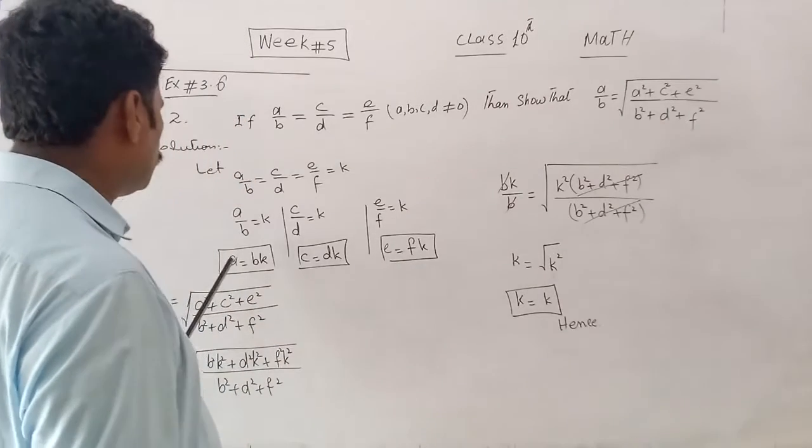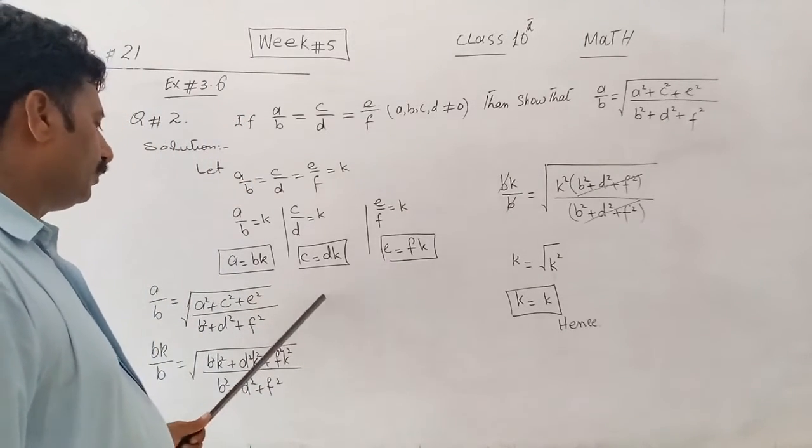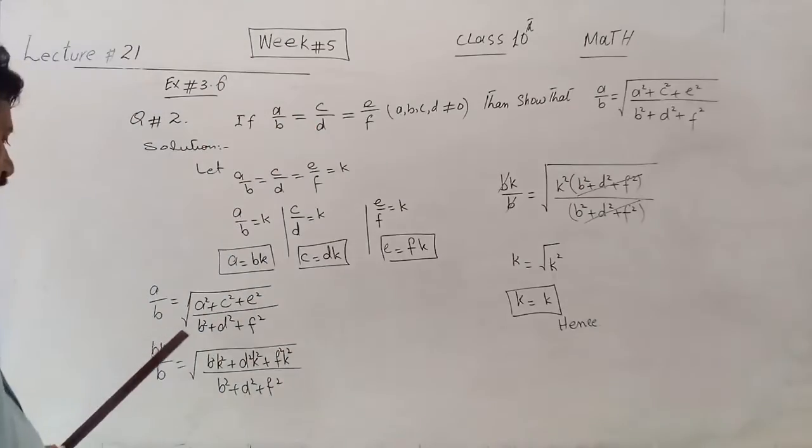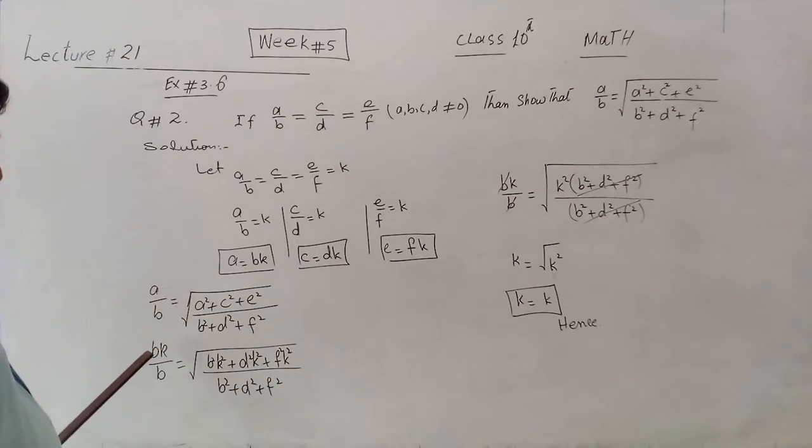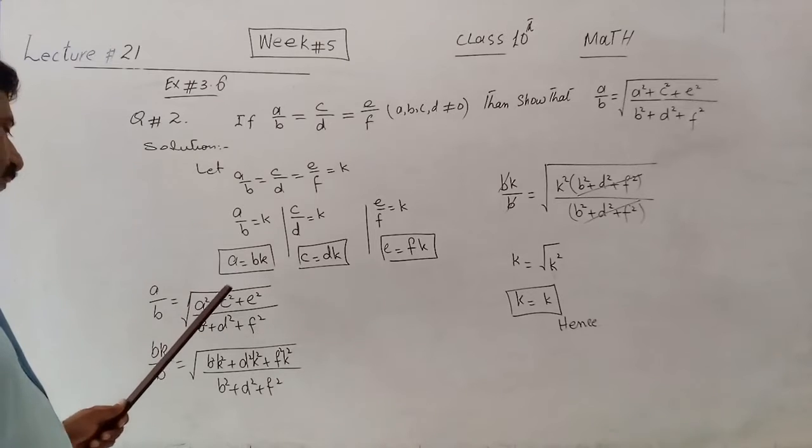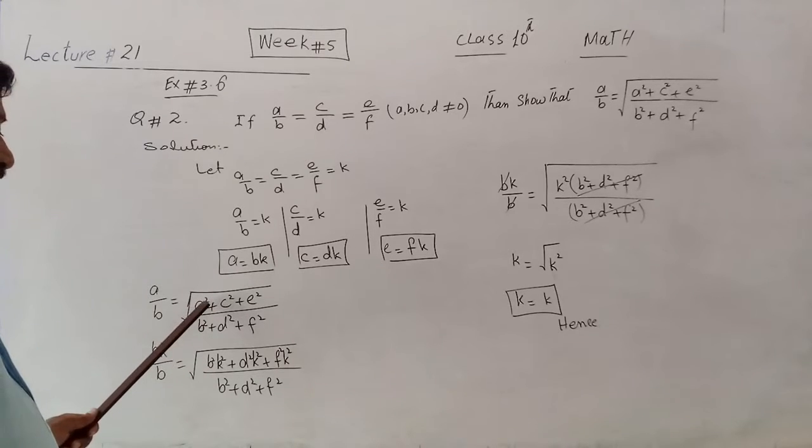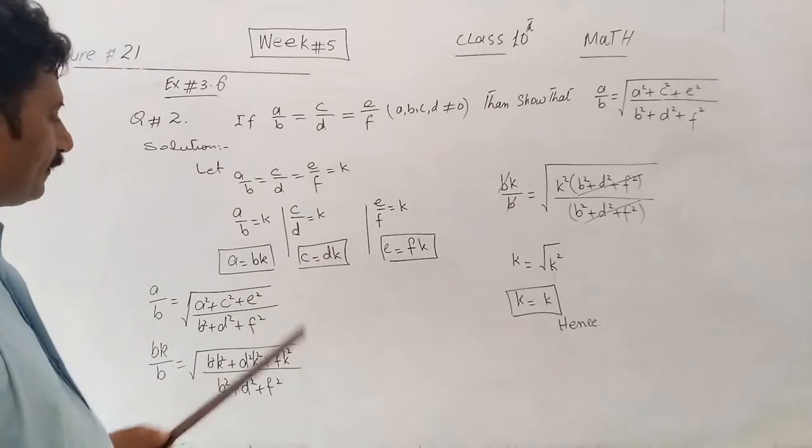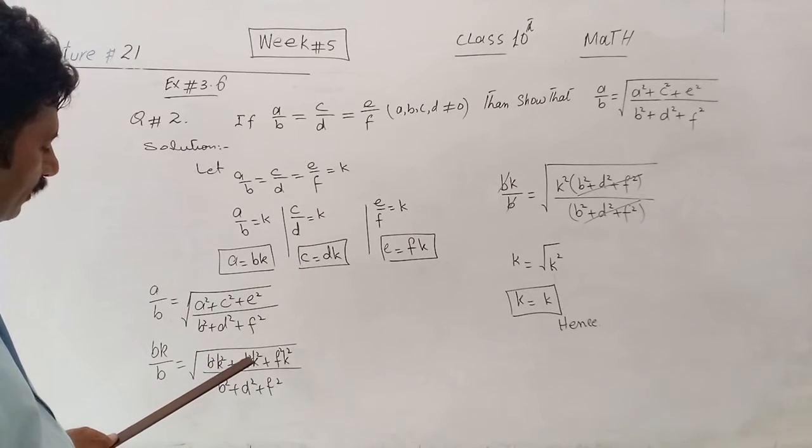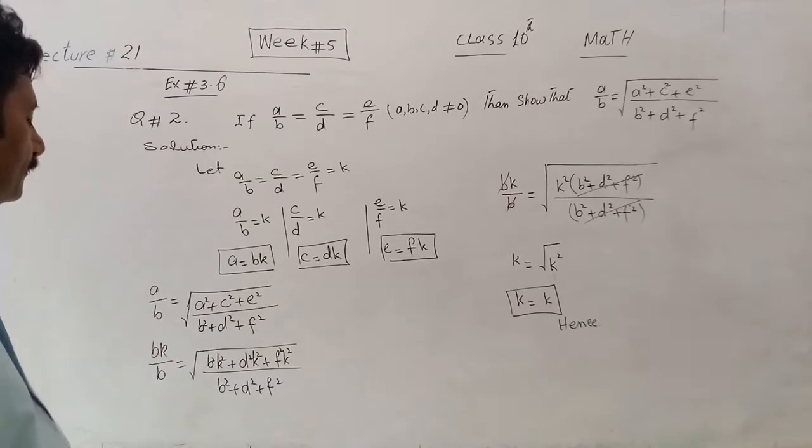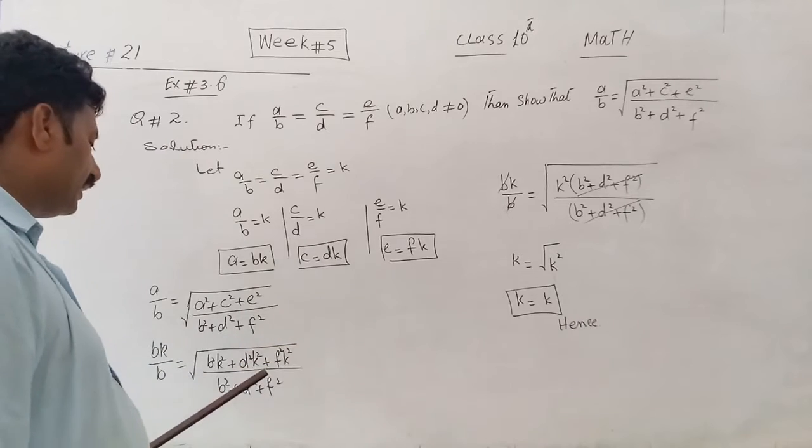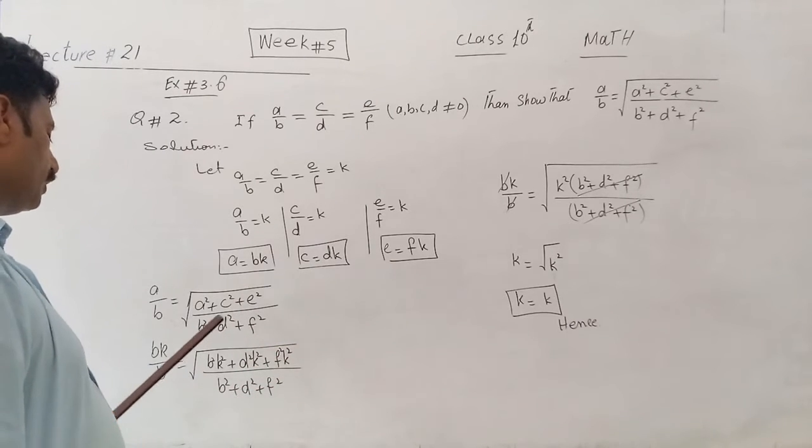So these three values are equal: A, C, and E, which we have put in this statement. This statement is very nice here. A value is equal to B·K, C is equal to D·K, and E is equal to F·K. So A value is equal to B·K.